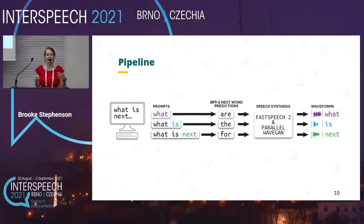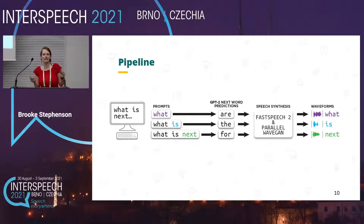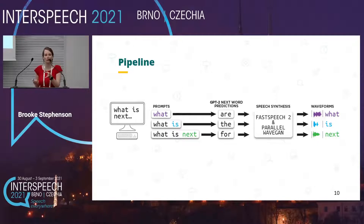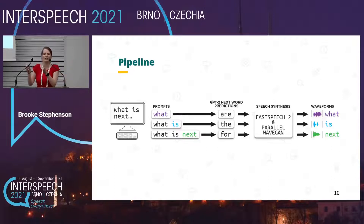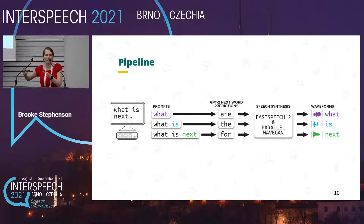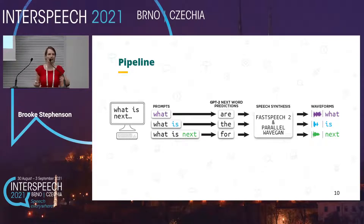For example, if our user would like to say 'what is next,' we don't need to wait until we know the word 'next.' We can start with the first word. When we know they want to say 'what,' we pass 'what' to GPT-2, and GPT-2 predicts the next word will be 'are.' Then we pass 'what are' to the text-to-speech model, discard the 'are' information, and just vocalize the word 'what.' We repeat this for each successive word in the sentence.